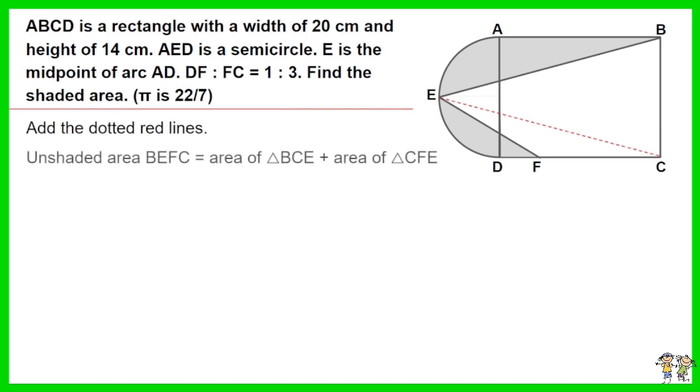Unshaded area BEFC equals area of triangle BCE plus area of triangle CFE. Area of triangle BCE equals half times 14 times 27. Area of triangle CFE equals half times 15 times 7.